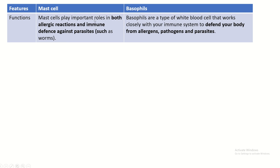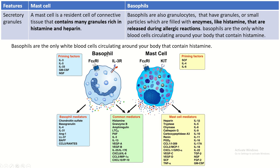Mast cells play an important role in both allergic reactions and immune defense against parasites. Basophils are a type of white blood cell that works closely with your immune system to defend your body from allergens, pathogens, and parasites. Mast cells are residents of connective tissue that contain many granules rich in histamine and heparin. Basophils also have granules filled with enzymes like histamine that are released during allergic reactions. Basophils are the only white blood cells circulating in your body that contain histamine.